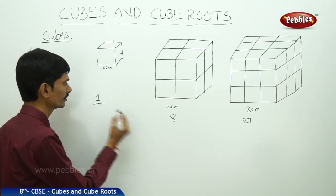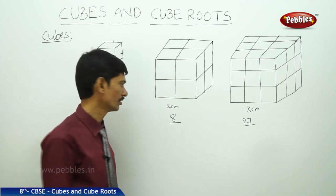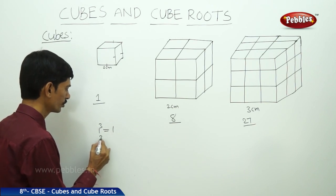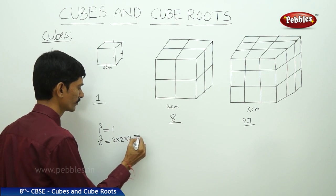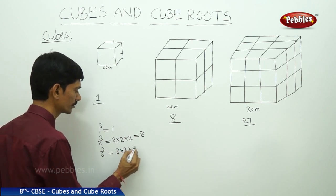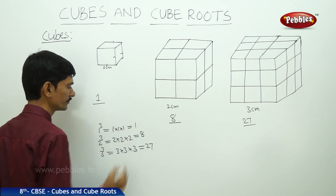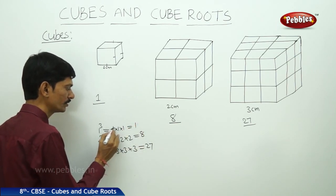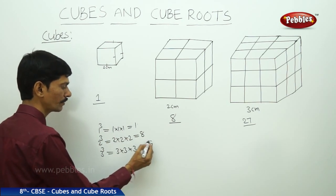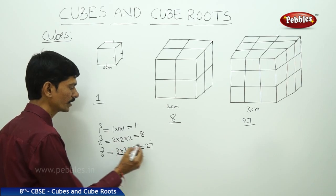Observing all these numbers — one, eight, twenty-seven — these are the cubes of natural numbers. One can be written as 1 cubed equals one times one times one. Eight can be written as 2 cubed, equals two times two times two. Twenty-seven can be written as 3 cubed, equals three times three times three. So if a number is multiplied by itself three times, we get the cube of that number.